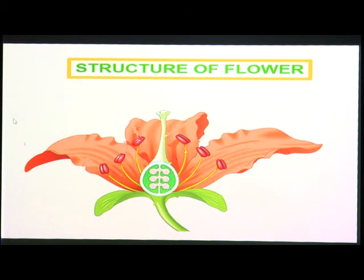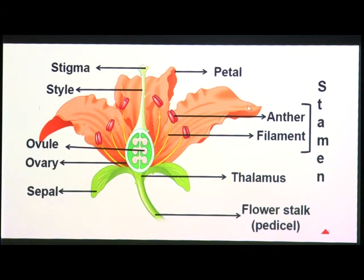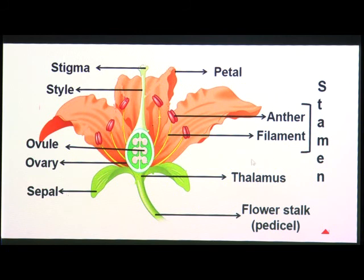This is the structure of the flower. The flower stalk is also called the pedicel. Above it is the thalamus. The filament and anther together form the stamen. Other visible parts are the petal, stigma, style, ovule, ovary, and sepal.